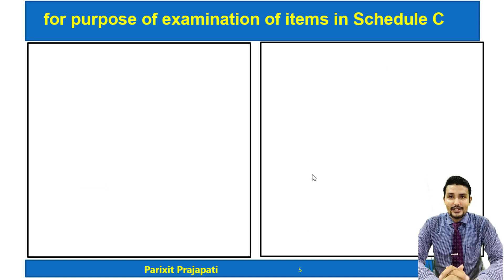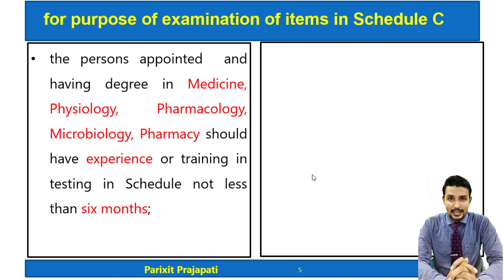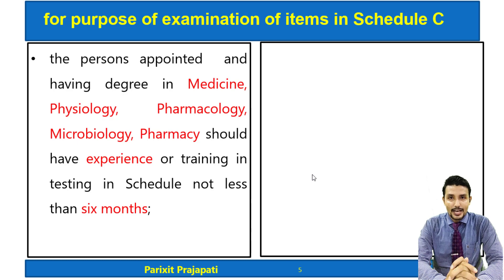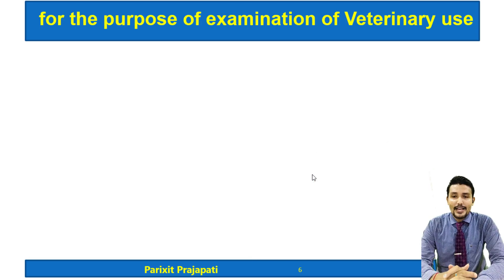Both qualification paths require training in testing items stated in Schedule C. If a person has a degree in medicine, physiology, pharmacology, microbiology, or pharmacy, they need at least six months experience in testing Schedule C items. If not, they need three years experience in Schedule C drug testing, or two years if that training is in the Central Drug Laboratory.